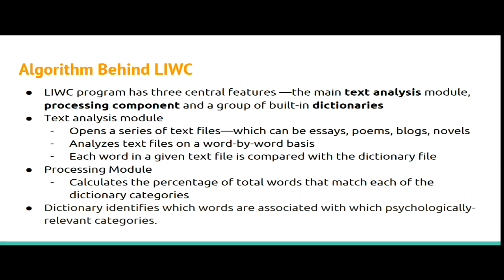The algorithm behind LIWC comprises three main features: the text analysis module, the processing components, and the built-in dictionaries. The text analysis module opens a series of files and analyses the text file on a word-by-word basis. Each word is then compared with the dictionary. The processing module calculates the percentage of total words and matches each word with the dictionary. The dictionary is the heart of this program — it tells the text analysis module how to identify and categorise each word, associating words with psychologically relevant categories.